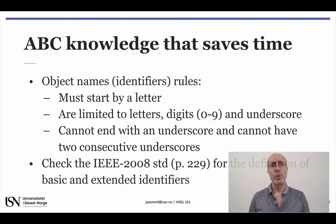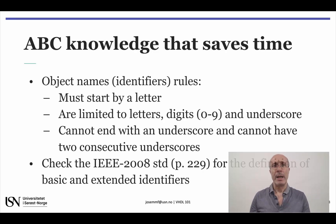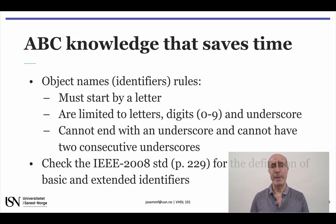You should also bear in mind that object names must start with a letter. Names are limited to letters, digits, and the underscore symbol, and an underscore cannot be used to terminate a name or appear twice consecutively. The rules for creating identifiers are laid out in section 15.4 of the IEEE standard, but be aware that this is not an easy document to read. It's better to choose short and reasonable names.